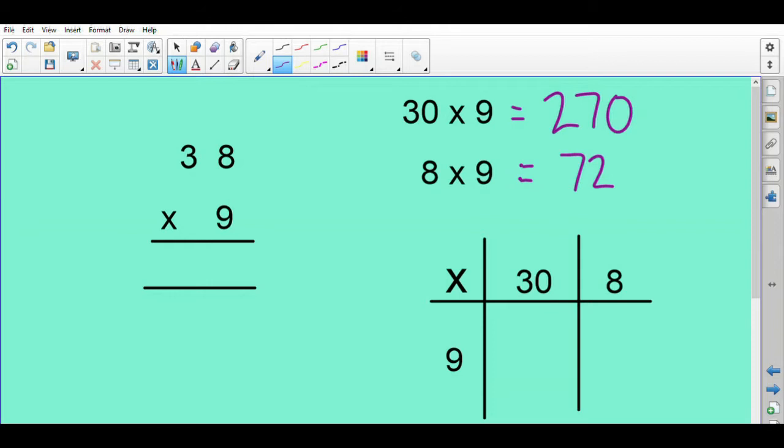Here we have a method called the grid method that we also use in school. It's just, again, another way of understanding how the calculation works. So 9 times 30, as we've already worked out, is 270. 9 times 8 is 72. If we add those two numbers up, we get 342.